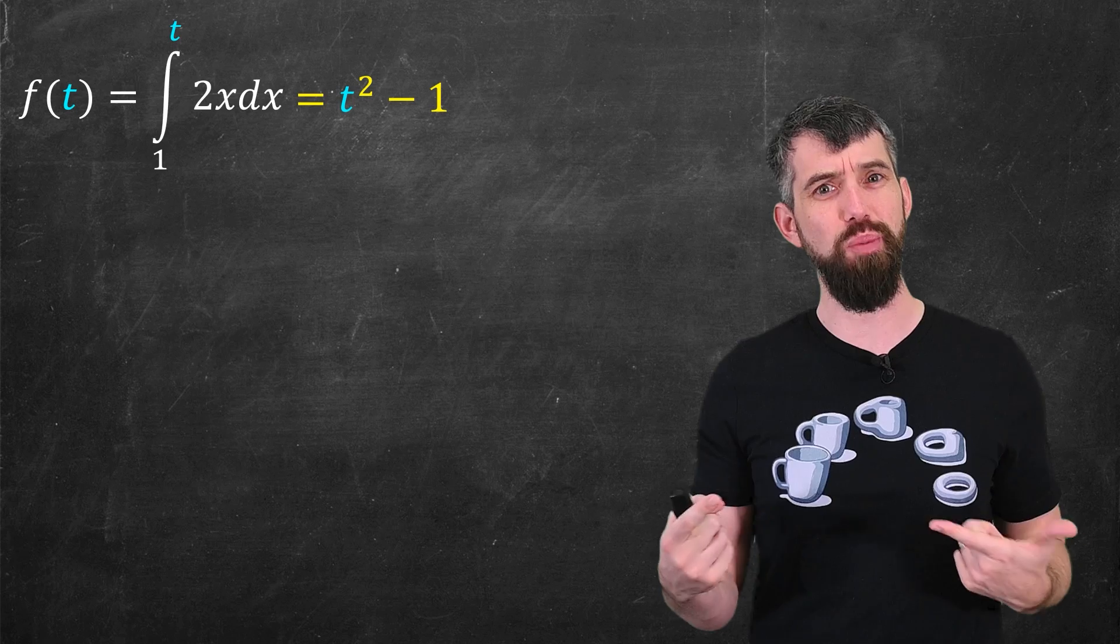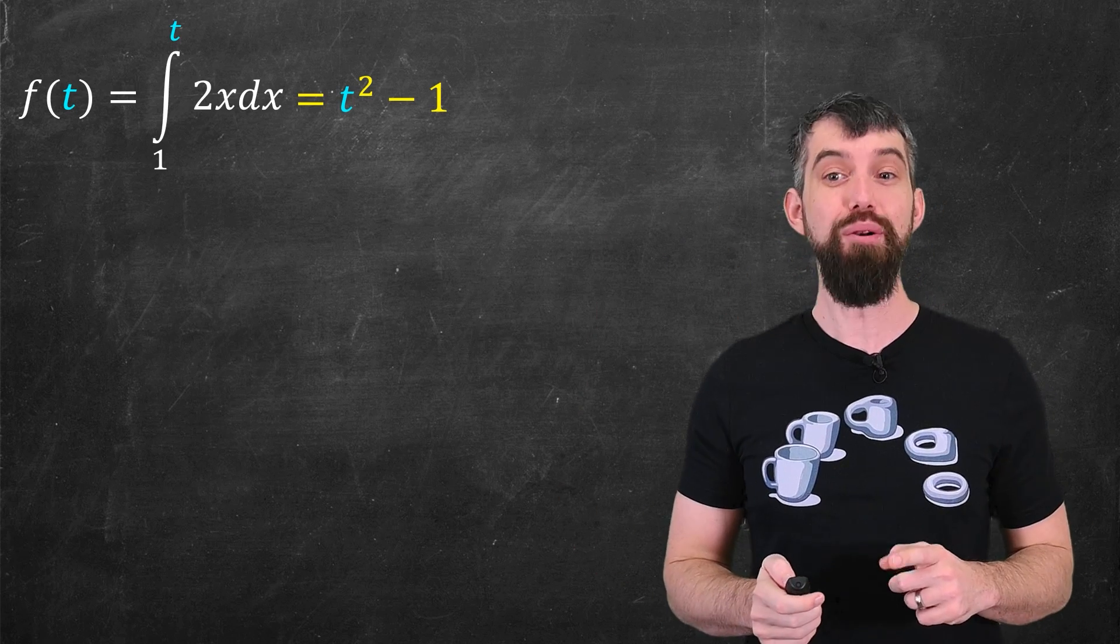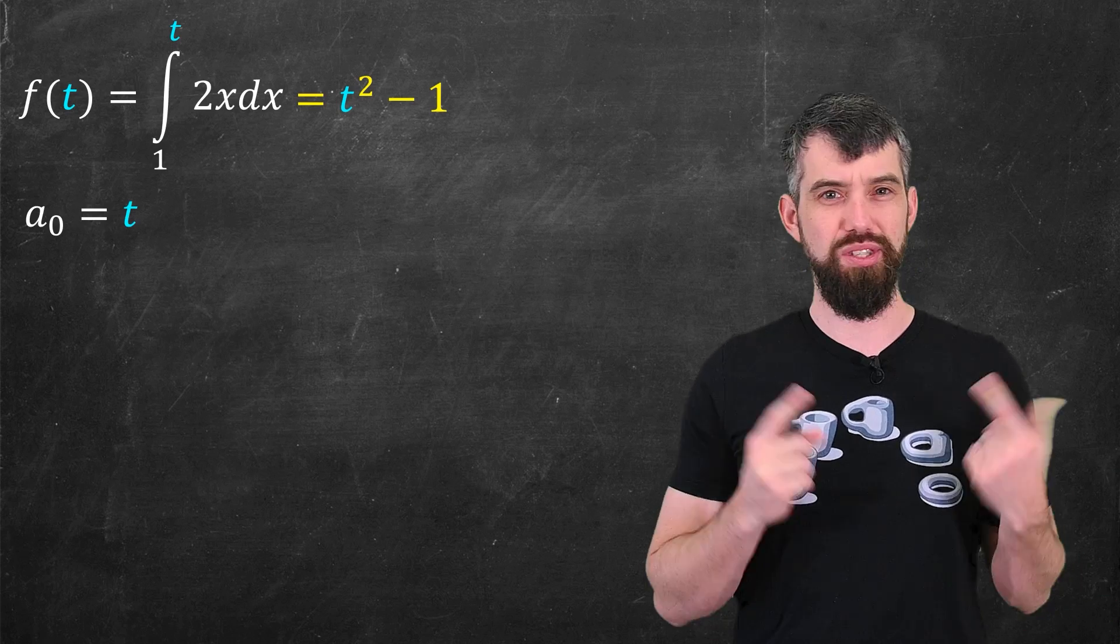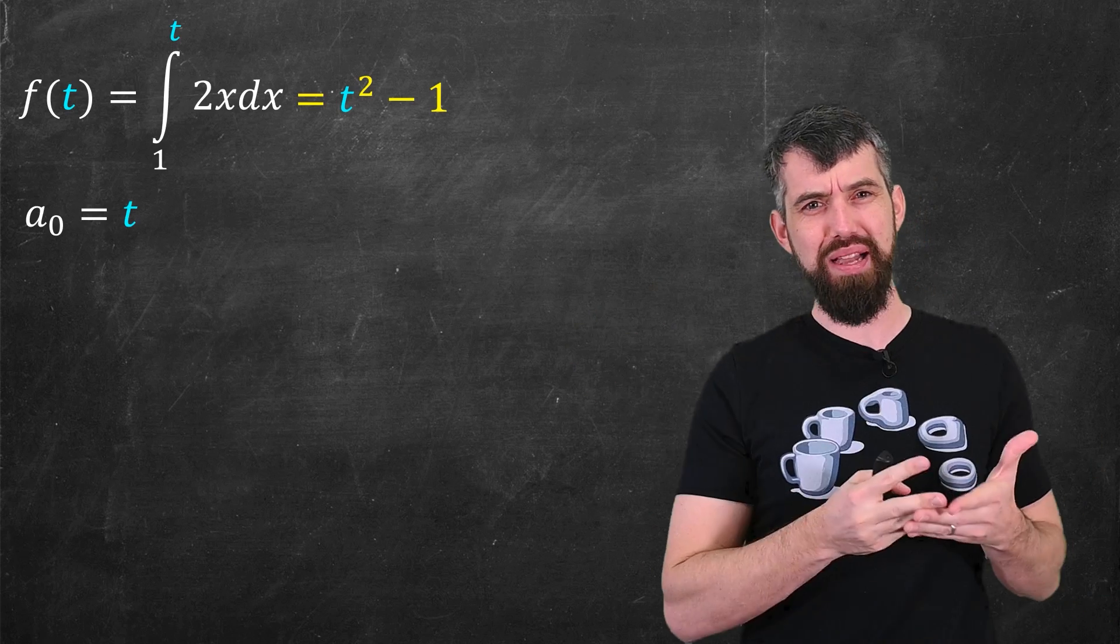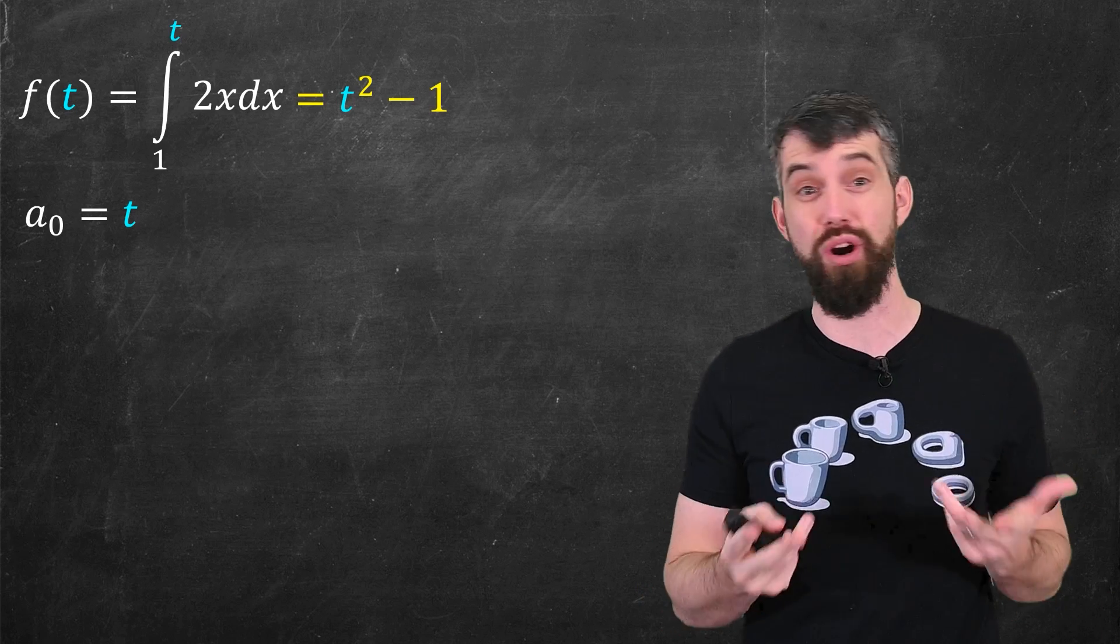Now, there's multiple ways to interpret that tower of integrals, but the way I'm going to do it is with a sequence. I'm going to imagine I start at some value of t. So I'll have a first term of my sequence, an a₀, just equal to t. It's where I start. It could be anything.